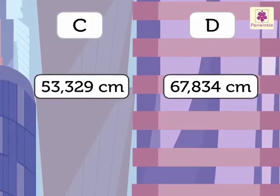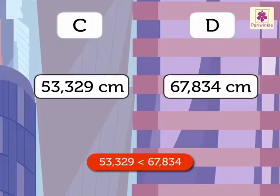We begin by comparing the digits in the 10,000th place, that is 5 and 6. The digits are different here. Here, 5 is smaller than 6. So, the number 53,329 is smaller than the number 67,834.